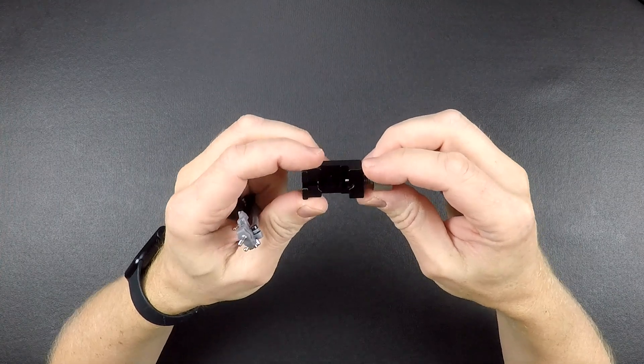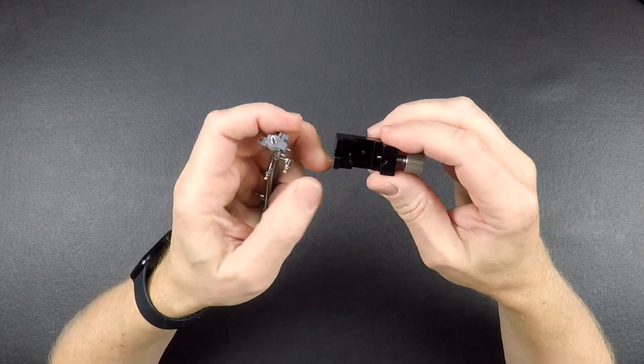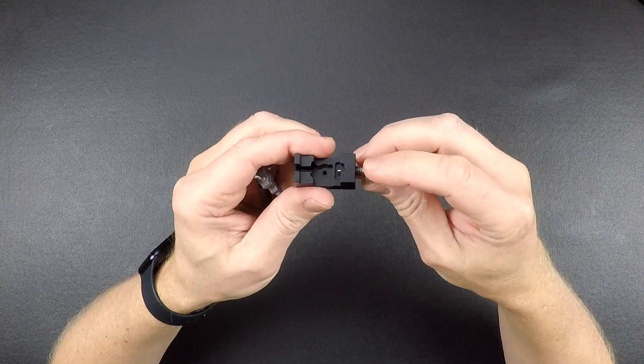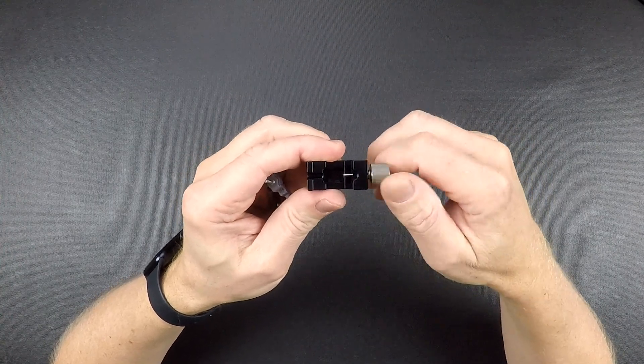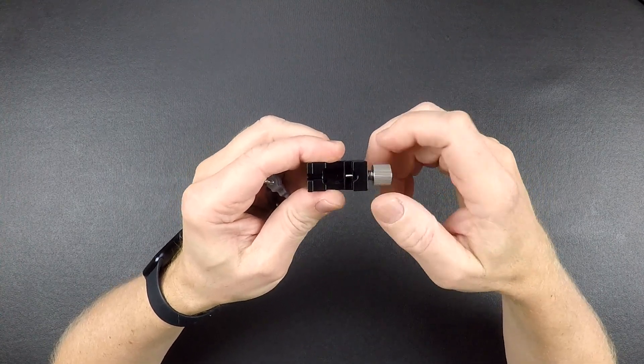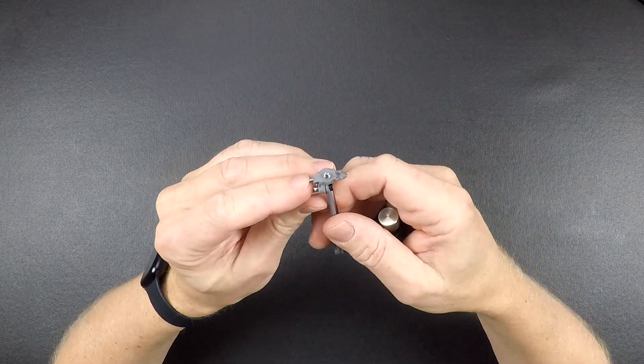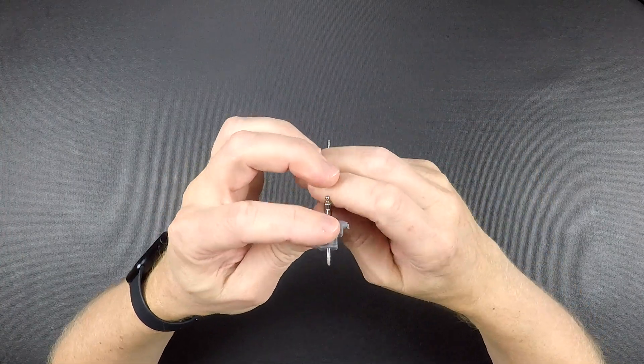Now one question we know some people will ask is why didn't we make it so that it drives the pin all the way out? We didn't want to do this because in some of the initial testing we did with this, if you do get this kingpin seized in the axle...